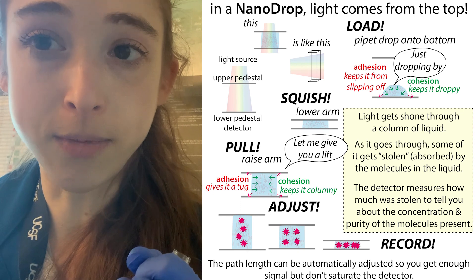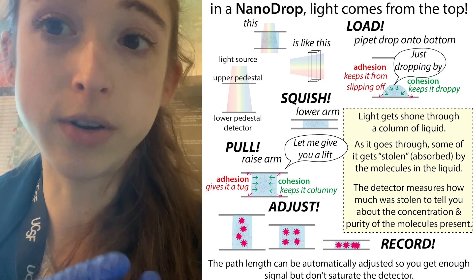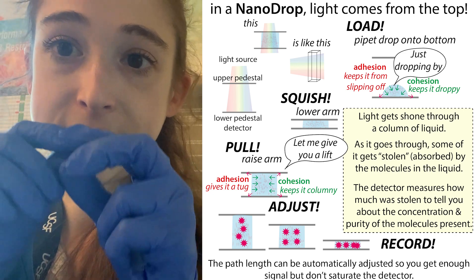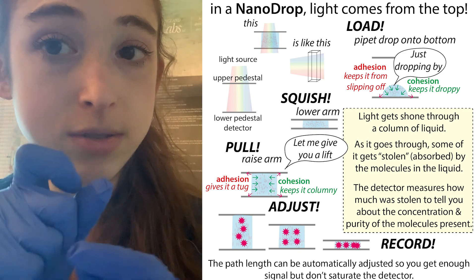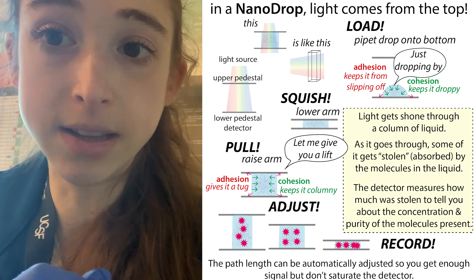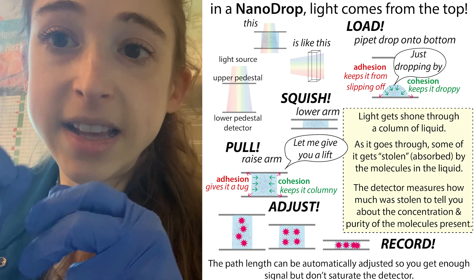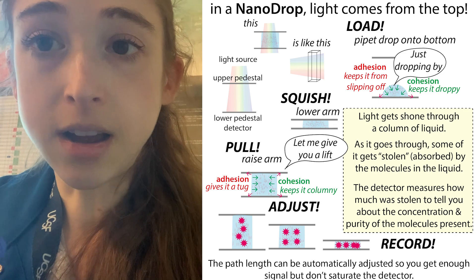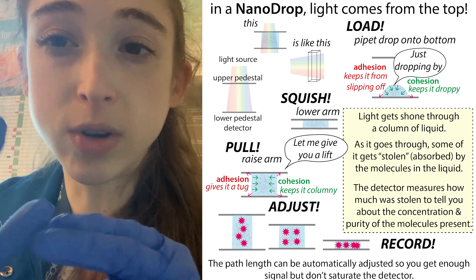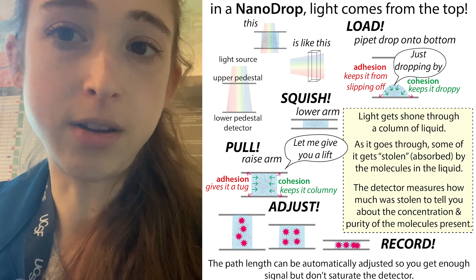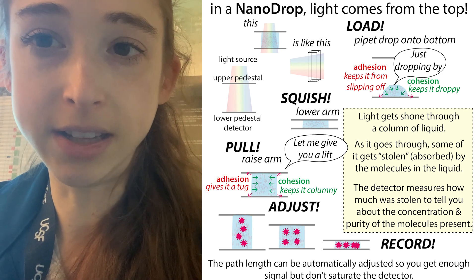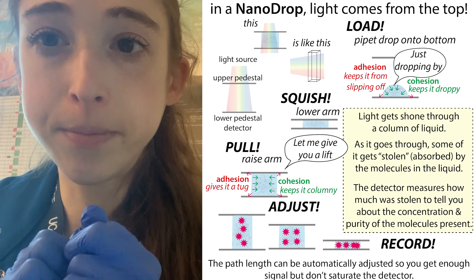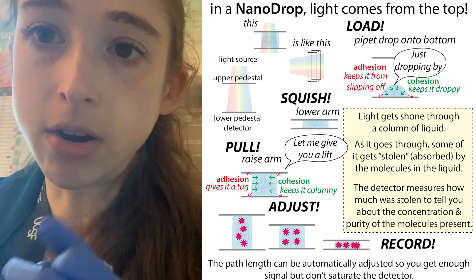One thing that can happen is that the column might not form very well. This can happen if you don't have enough liquid, or if your liquid contains surfactants or surface-acting agents - things like detergents that interrupt the water-water interactions you need to form that column. Also, if you have a lot of protein in your sample it can make column formation harder because it disrupts those water interactions. One way to help with protein samples is to pipette a bit more - typically you use one to two microliters, but with protein I try to use one and a half to two microliters. With DNA or RNA, you have less of this problem so a lower amount works fine.